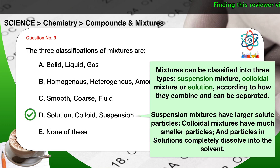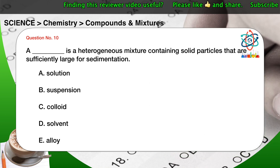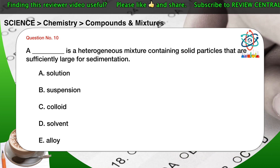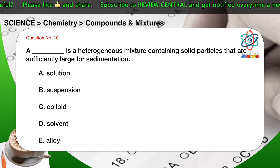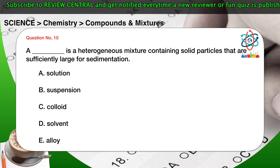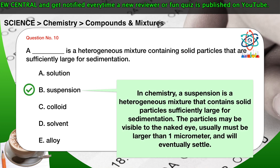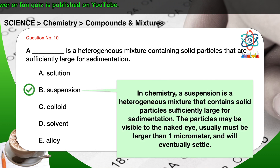Question number ten: a blank is a heterogeneous mixture containing solid particles that are sufficiently large for sedimentation. A) Solution. B) Suspension. C) Colloid. D) Solvent. E) Alloy. The correct answer is B. In chemistry, a suspension is a heterogeneous mixture that contains solid particles sufficiently large for sedimentation. The particles may be visible to the naked eye, usually must be larger than one micrometer, and will eventually settle.